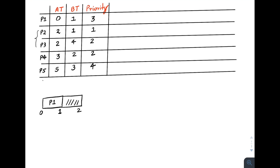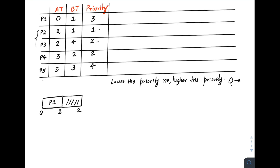At time two, P2 and P3 both enter the ready queue. Since we have multiple processes, we check their priorities. One important note: lower the priority number, higher the actual priority. We are considering zero as the highest priority. P2 has priority one and P3 has priority two, so P2 has higher priority and will be scheduled first.